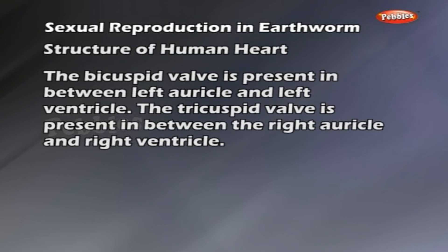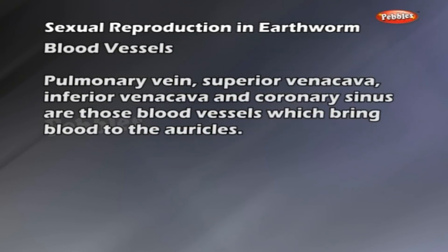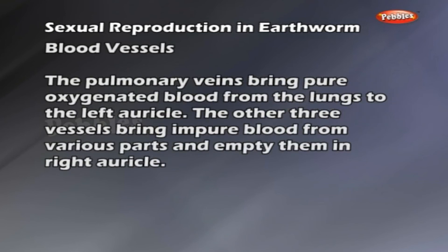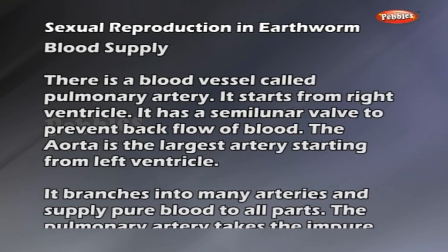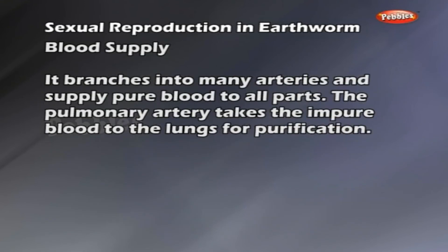The blood vessels bringing blood to the auricles are the pulmonary vein, superior vena cava, inferior vena cava and coronary sinus. The pulmonary veins bring pure oxygenated blood from the lungs to the left auricle; the other three vessels bring impure blood to the right auricle. The pulmonary artery starts from the right ventricle and has a semi-lunar valve to prevent backflow. The aorta, the largest artery, starts from the left ventricle and supplies pure blood to all parts. A semi-lunar valve is also present in the aorta. The pulmonary artery takes impure blood to the lungs for purification.